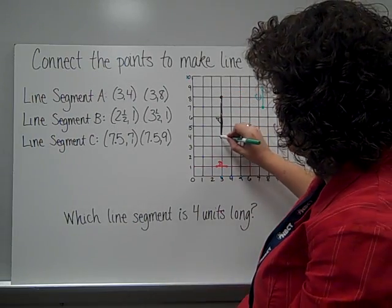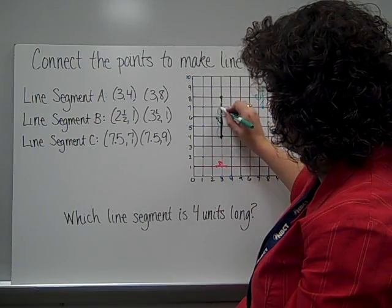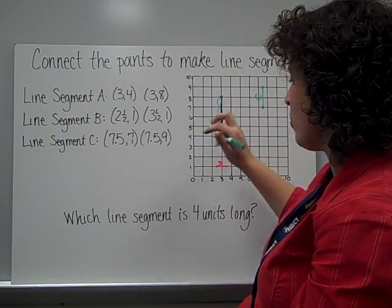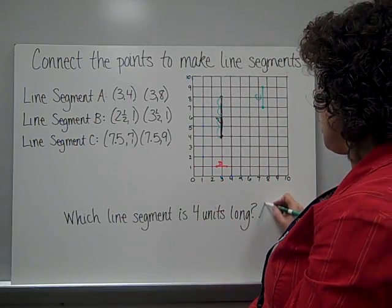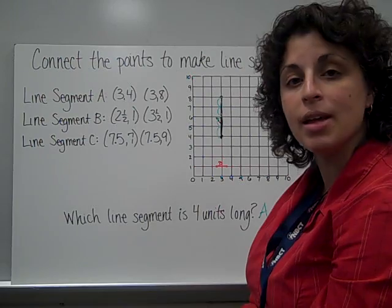Let me show you what I just did. 1, 2, 3, 4. I counted how many spaces it moved up. So which segment is 4 units long? That would be line segment A.